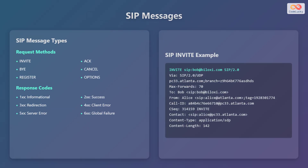SIP uses various message types to manage VoIP sessions, broadly categorized into request methods and response codes. Request methods are commands sent from a client to a server to perform specific actions. Common request methods include: Invite, which initiates a call; ACK, which acknowledges a final response; BYE, which terminates a call; Cancel, which cancels a pending request; Register, which registers a user's location; and Options, which queries the capabilities of a server.